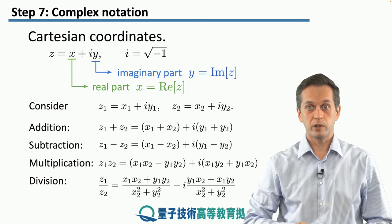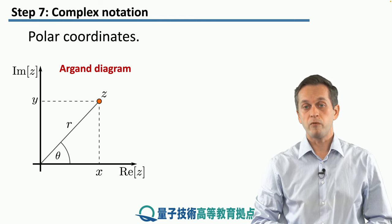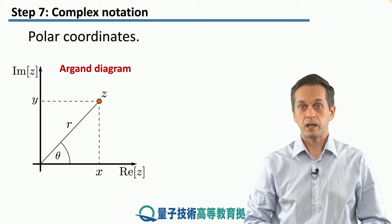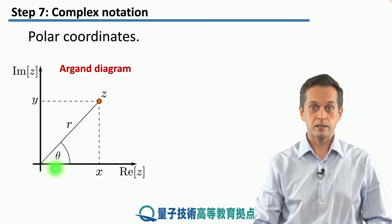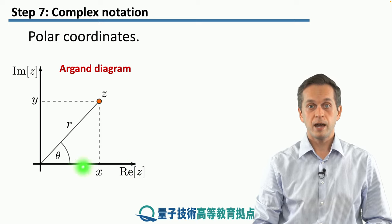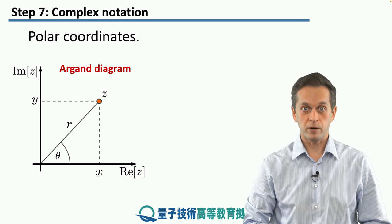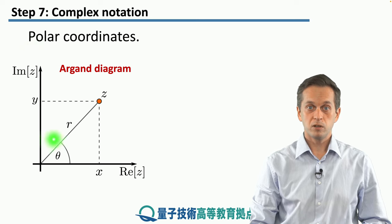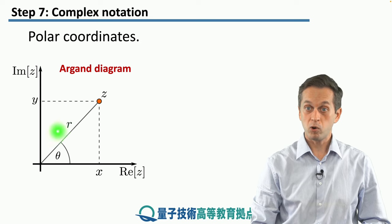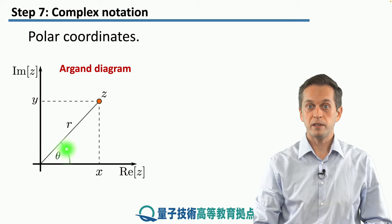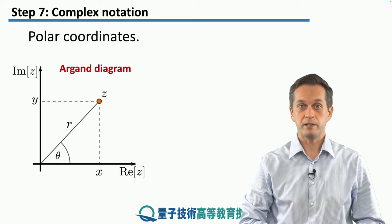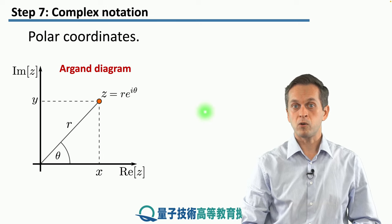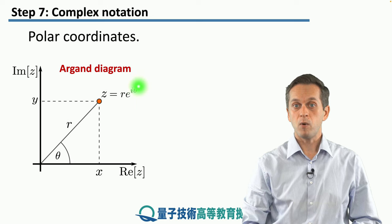That is why we are going to change to polar coordinates. In polar coordinates, we think of a complex number z as a point in a plane called the Argand diagram. The horizontal axis gives us the real part and the vertical axis gives us the imaginary part. The distance from the origin to z is given by the parameter r, and the angle theta between the real axis and the line connecting to z is the phase. In this representation, we write the complex number as r times e to the power of i theta — why this is, we will see shortly.